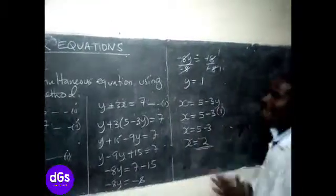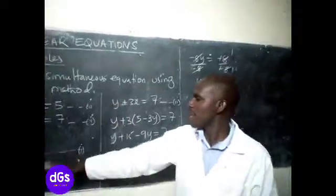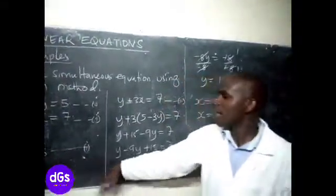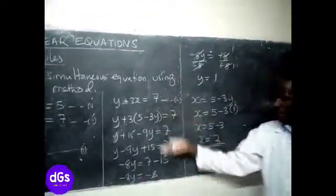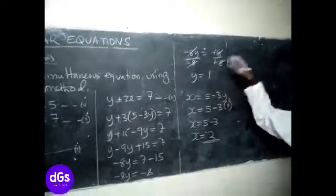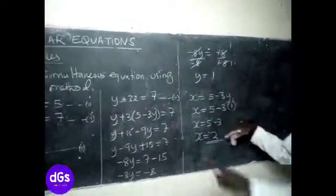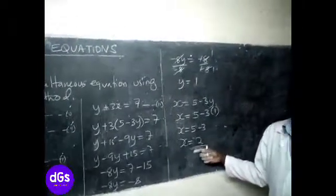So now, this is the substitution method where you pick one of the equations, express one unknown in terms of the other. Now, take that one, substitute it in the second equation. Now, open the brackets, get the value of the second unknown. Then, using the first expression, get the value of the first unknown.